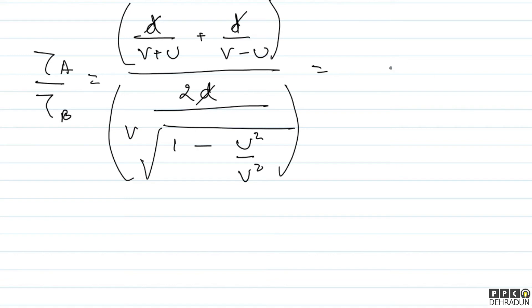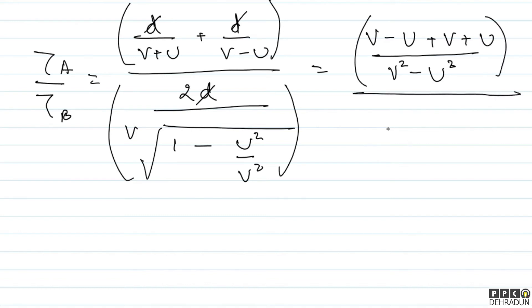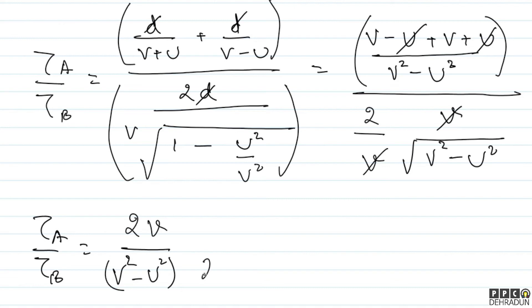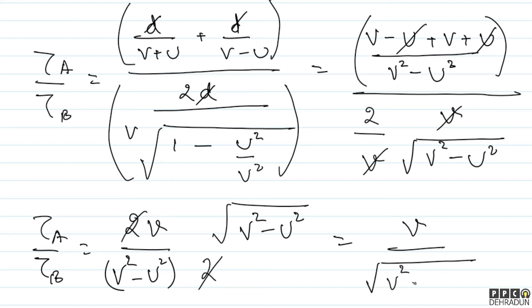After cancelling D, the numerator is 1/(V+U) + 1/(V−U) = 2V/(V²−U²). The denominator of tau B becomes 2/(V · √(V²−U²)). Dividing, V cancels from numerator and denominator, and 2 cancels with 2, leaving tau A upon tau B = V / √(V²−U²). This simplifies cleanly.